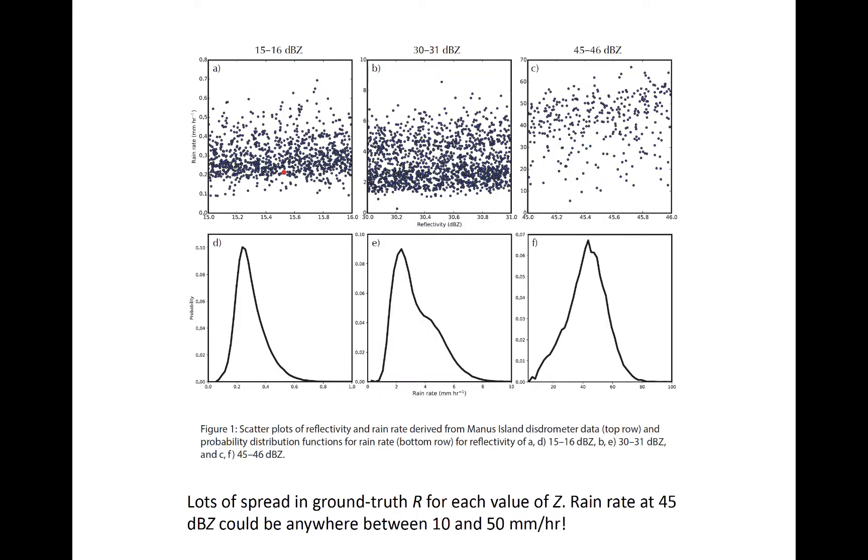As opposed to a deterministic estimate of rainfall, which assigns a single estimate of rain rate based on one value of reflectivity, we can express potential rainfall as a probabilistic range if we have enough data to create a well-populated distribution of rain rate across a wide range of reflectivity.